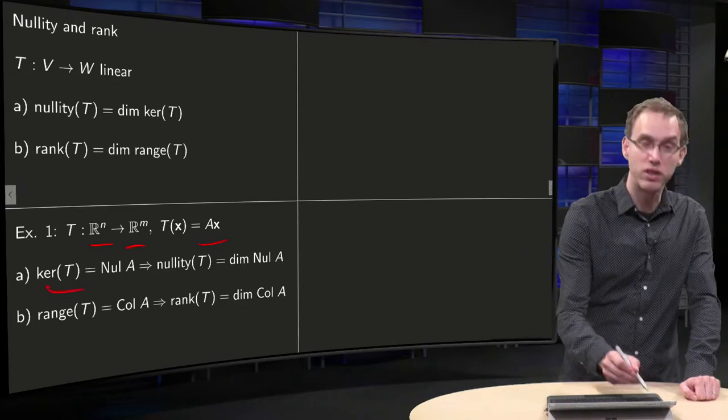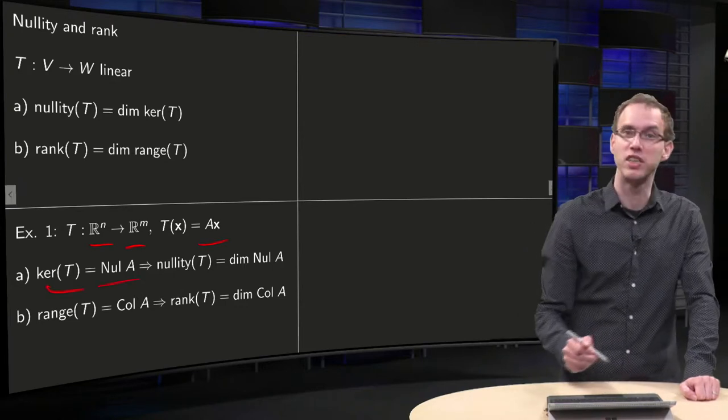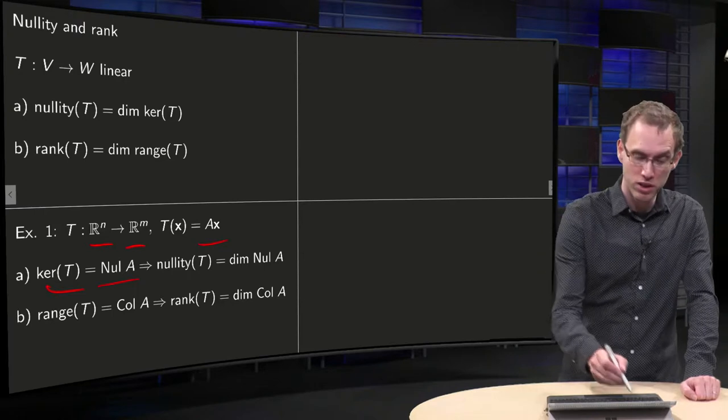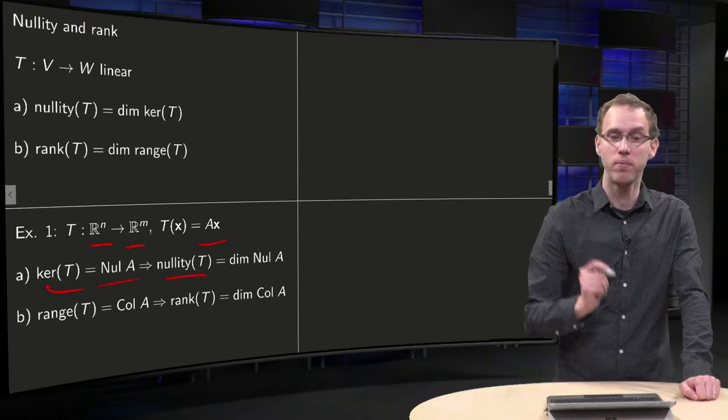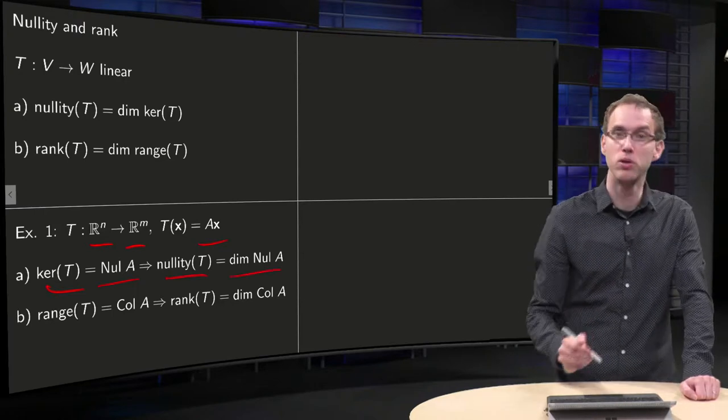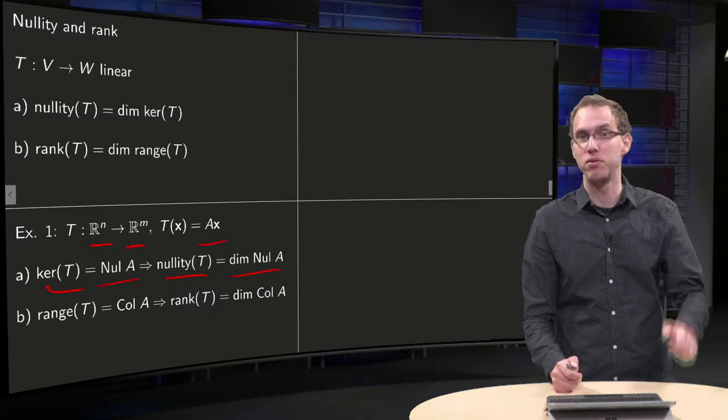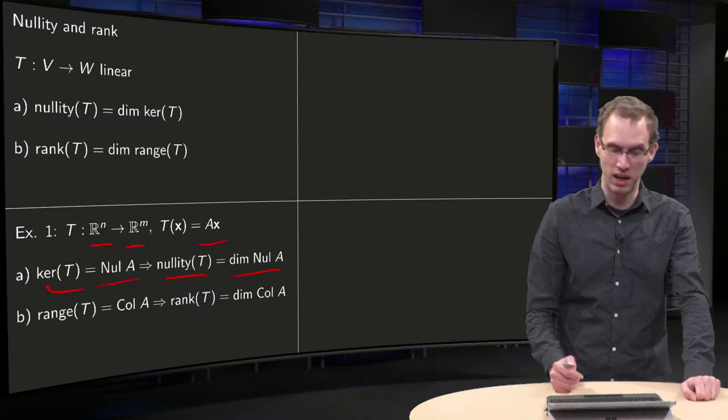then the kernel of T was the null space of the matrix A, so the nullity of T, which is a number, is the dimension of the null space of A. You can find it of course by looking at the number of free variables of A.